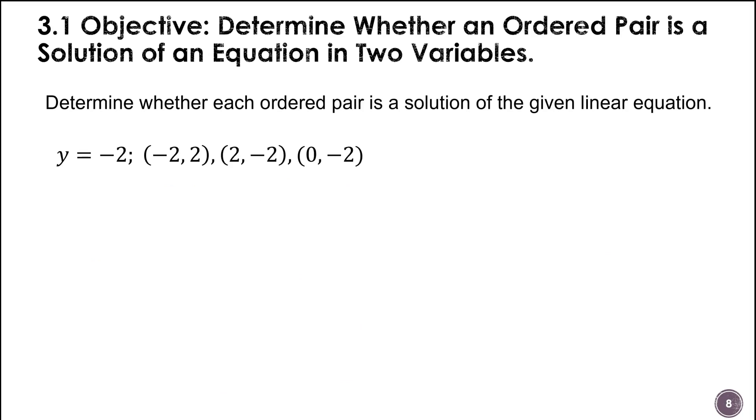We're going to try this again. This one's a little tricky. Y equals negative 2 is an equation of a horizontal line. And so there's no place to substitute for x. Basically, if the y is negative 2, this is going to be a true statement. So I put the 2 in for y. You can see that's false. So we say no.